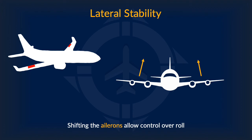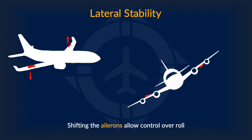Shifting the ailerons enables control over roll, as we have stated before. Through shifting one aileron downwards while shifting another one upwards, the lift vectors can change. How this exactly works will be explored in our next video. So shifting the ailerons gives you control over the roll.